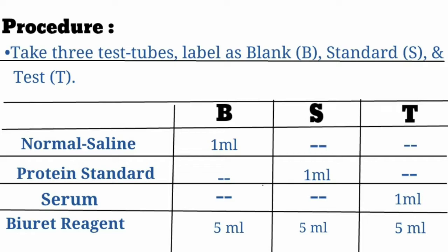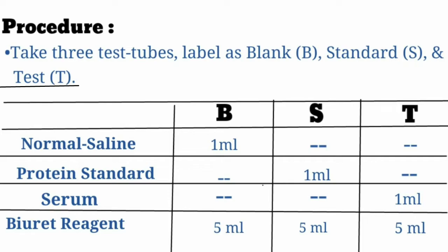To repeat the procedure: take 3 test tubes labeled blank, standard, and test. Add 1 ml normal saline to the blank, 1 ml protein standard to the standard tube, and 1 ml serum to the test tube. Then add 5 ml Biuret reagent to each of the three test tubes, mix the solution, and read the intensity in the colorimeter at 540 nanometers.